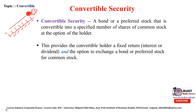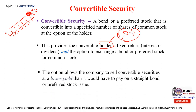The convertible security provides the holder a fixed return — interest or dividend — and the option to exchange the bond or preferred stock for common stock. The holder is the person who buys and holds this type of security. They receive interest if the security is a bond, or dividend if it is preferred stock. Besides these fixed returns, the investor also holds an option to convert the security into common stock.